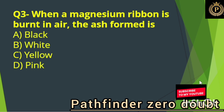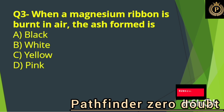When a magnesium ribbon is burnt in air, the ash formed is: Option B, white.